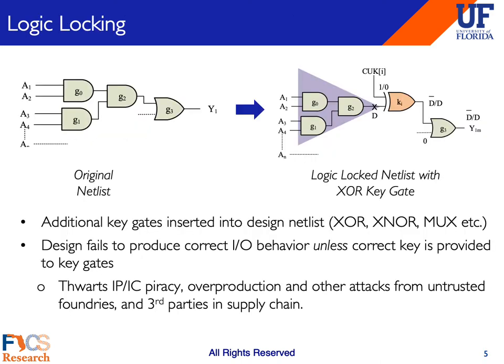To counter these IP supply chain threats, logic locking has been proposed as a potential solution. The basic idea behind logic locking is quite simple: it makes the functional behavior of a chip or design dependent on a secret key. This is done by adding keying logic—for example, XOR gates as shown in the figure here—into the design. The basic idea is that the design fails to produce the correct input-output behavior unless the correct key is provided to the key gates. This locking can also be done at various abstractions, but it's most commonly done at the gate or netlist level.